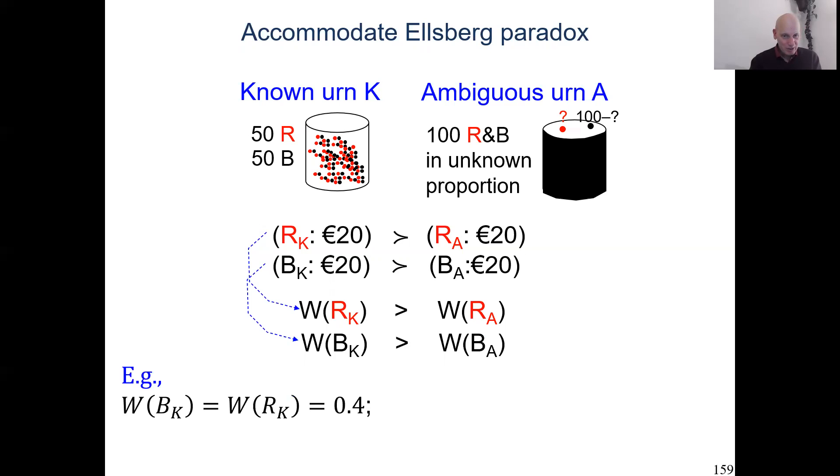And for the ambiguous event, the weights can be lower. So people like ambiguous events less. So the difference between these two is a sort of index of ambiguity aversion. With the non-additive W function, you can get this done with no problem at all. So this is an easy victory that we got here.